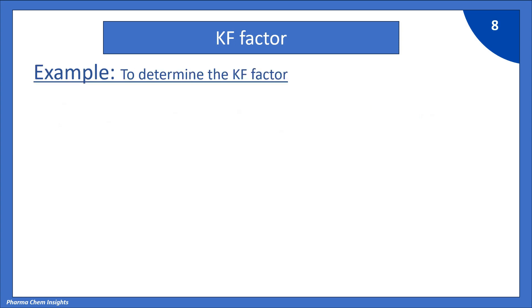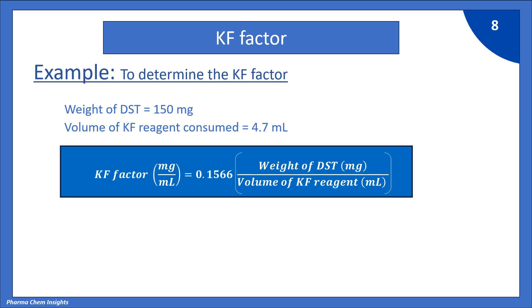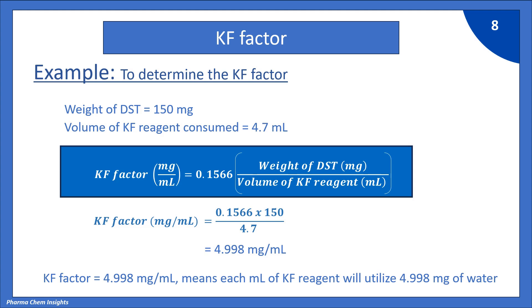Now, let us understand with the help of an example how to determine the KF factor. Weight of DST taken = 150 mg. Volume of KF reagent consumed for titration = 4.7 ml. According to the formula: KF factor (mg/ml) = 0.1566 × weight of DST (mg) ÷ volume of KF reagent (ml). Putting the values: 0.1566 × 150 ÷ 4.7 = 4.998 mg/ml. So, KF factor = 4.998 mg/ml. This means each ml of KF reagent will utilize 4.998 mg of water.